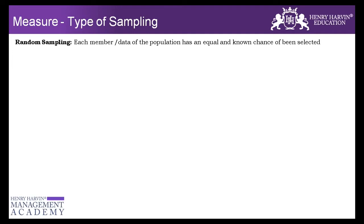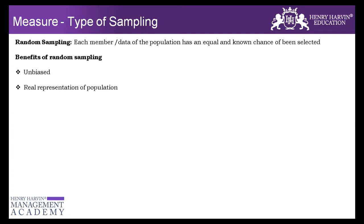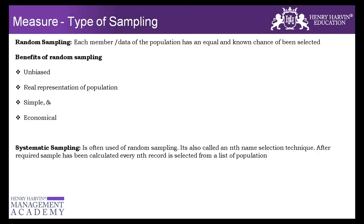Now let's talk about different types of sampling. Random sampling means each and every sample in a given population has an equal chance of being selected, regardless of region, product, or team. Some benefits of random sampling: it's very unbiased since we're not giving any special consideration to any group, it is a real representation of the population, and it is simple and economical.